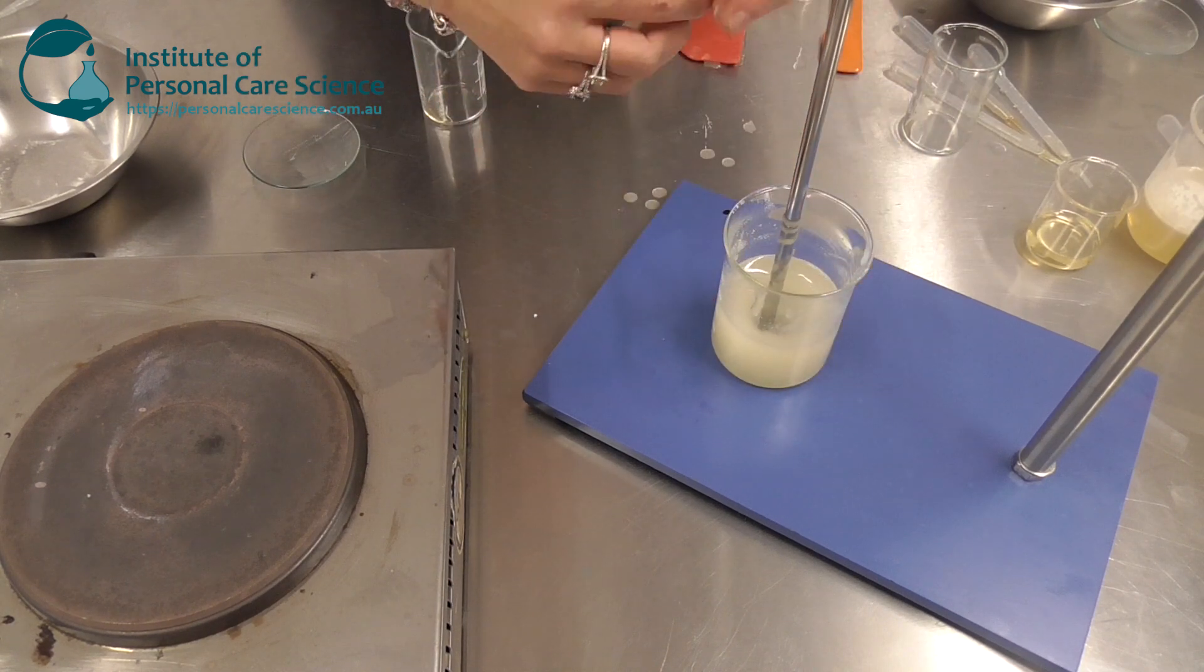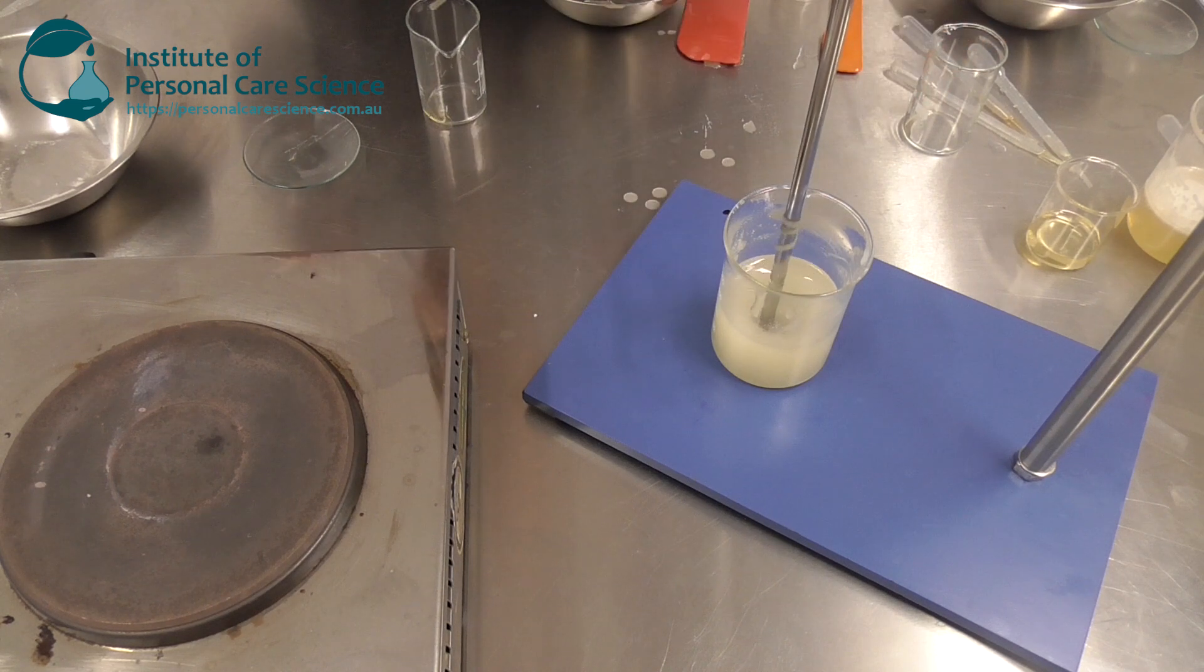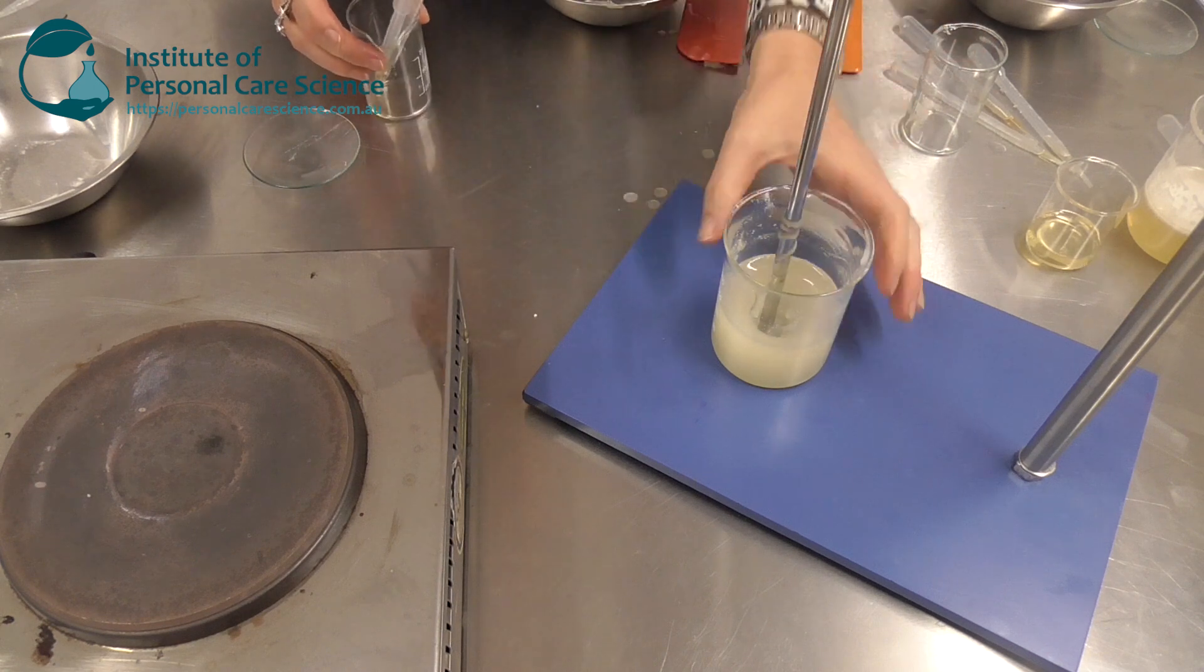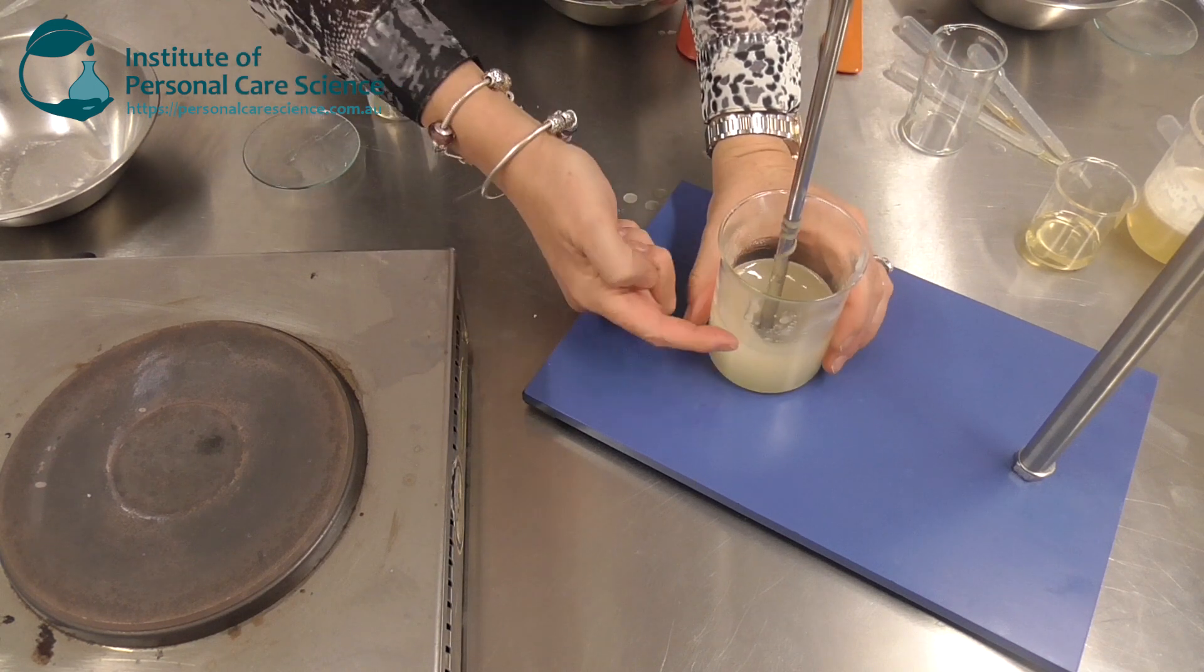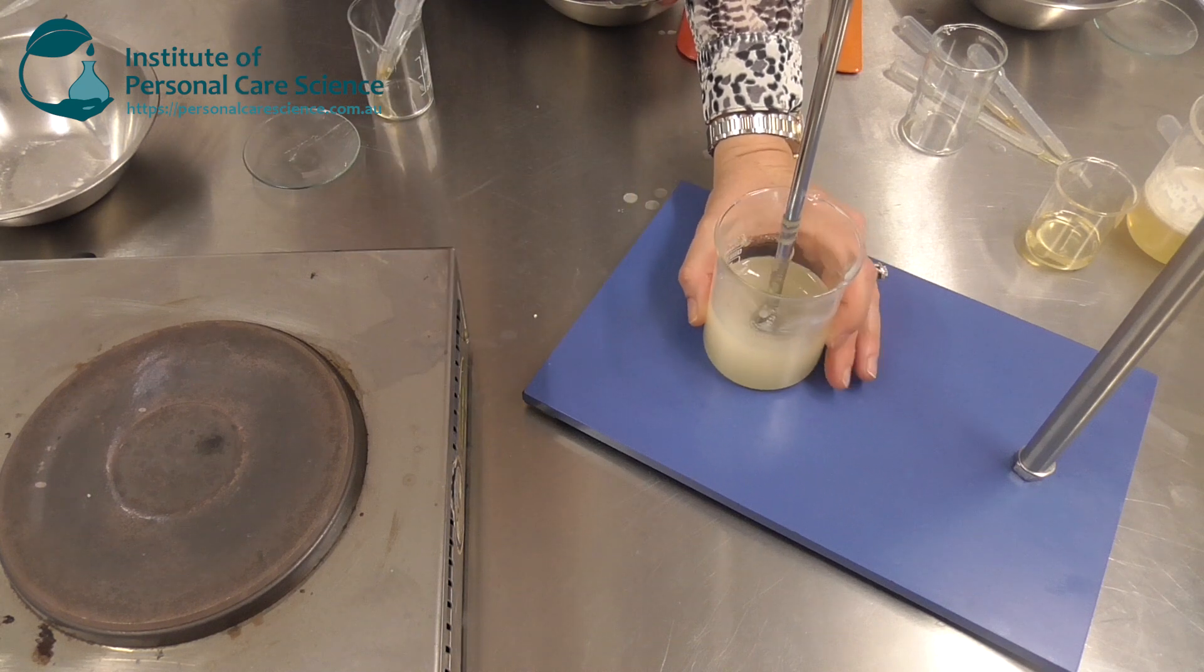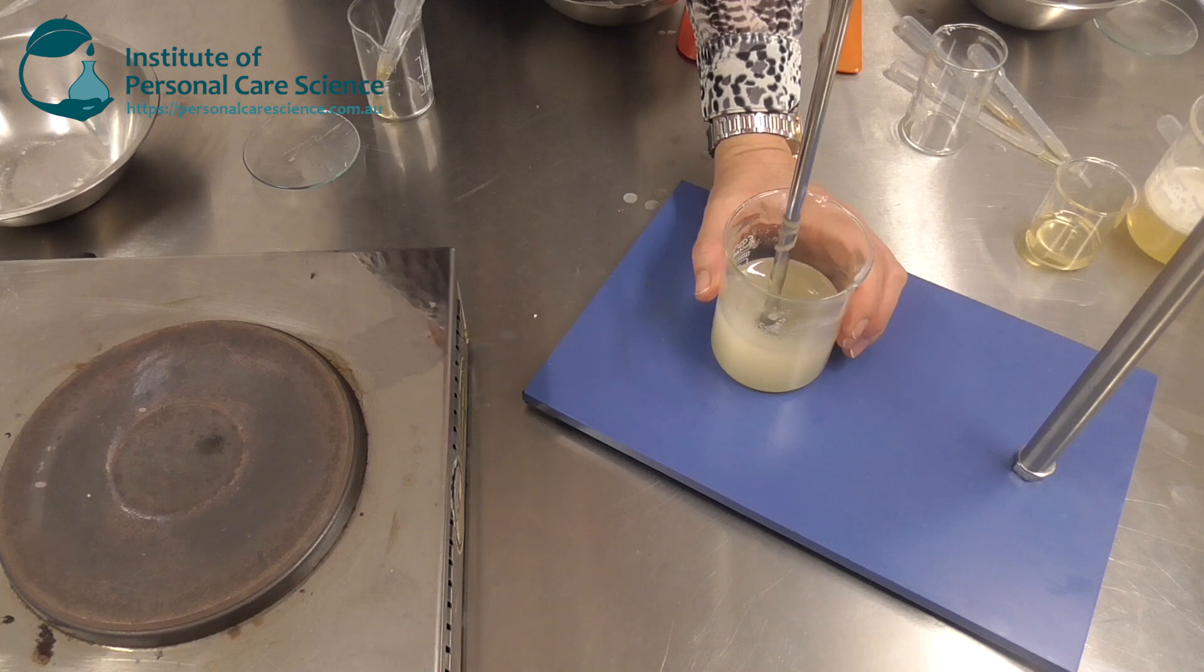Now once this has cooled slightly, we can then add our antioxidant and essential oil and stir that through again. We need this to be quite liquid still because we do need to pour this off while it's liquid, and I can see here that it has gone quite clear.